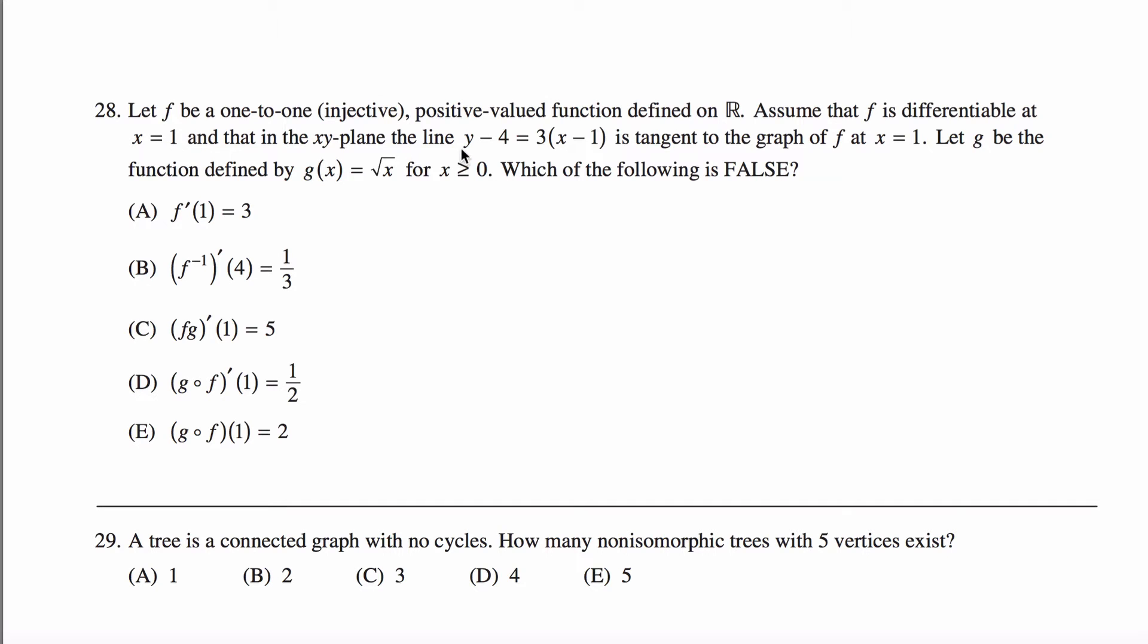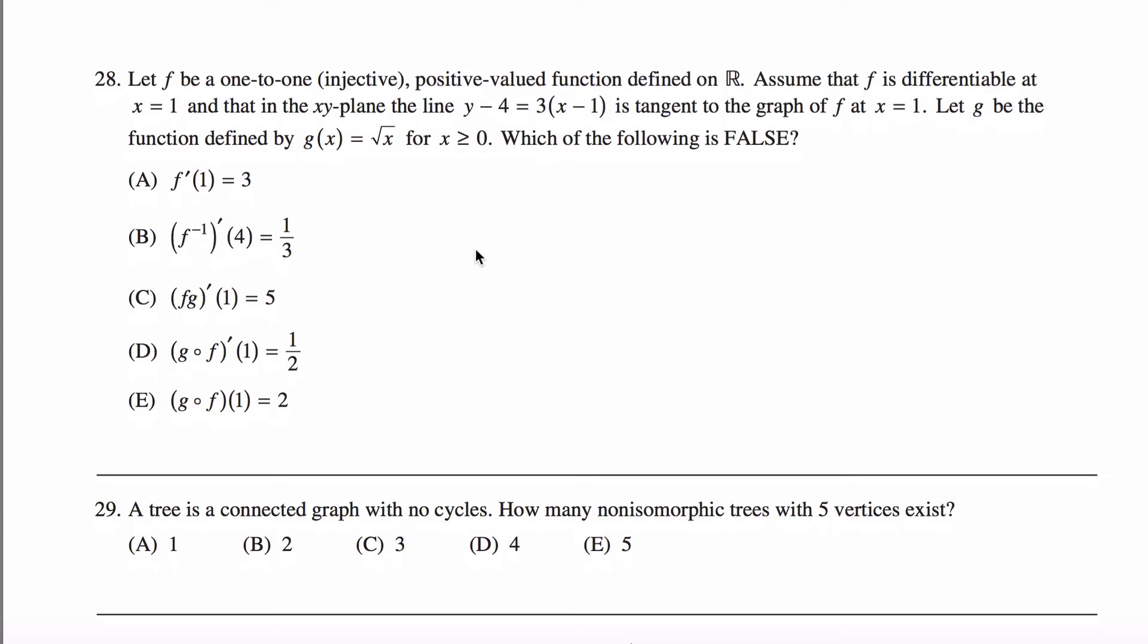All right, here are solutions for problem 28 for the GRE subject math practice exam. We have two functions, F and G here, and F is just some one-to-one, so I can talk about its inverse, positive-valued function on R. It's differentiable at this point. And G, G(x) is square root of x for x greater than or equal to zero. We're asked which of the following is false.